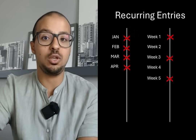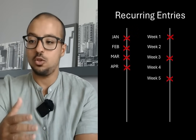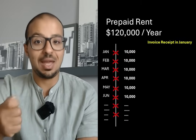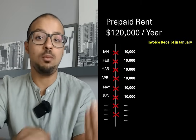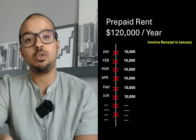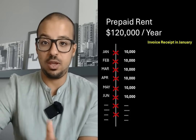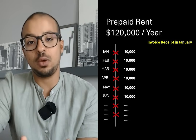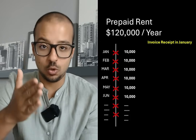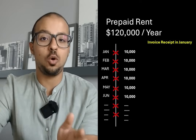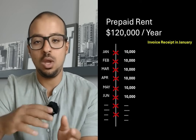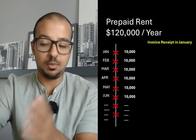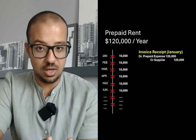One of the most common examples is the prepaid rent expense. We have our house and we pay rent annually at the beginning of the year — in January, or maybe even in December of the prior year. We issue an invoice to the rent supplier for the full value of rent for the year. Let's say the annual rent is 120,000. This 120,000 belongs to the whole year, so in January there should be 10,000, in February 10,000, in March 10,000 — split equally over 12 months.